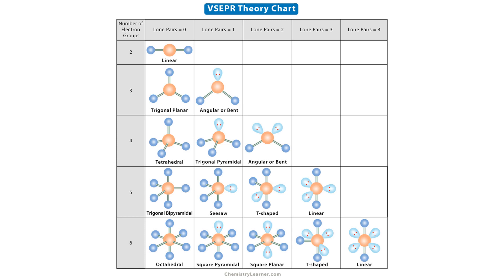So take a look on this one. The lone pair is designated as this one and then this one. That's why if we use the representation earlier, it would be A, X4, E2. So it's still under the octahedral electron geometry.